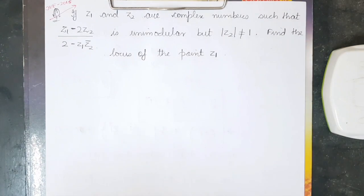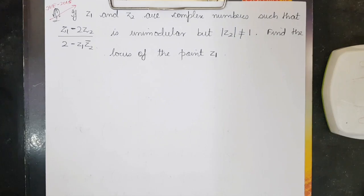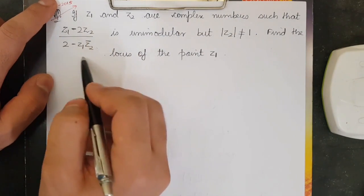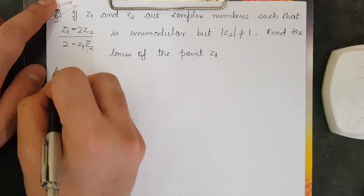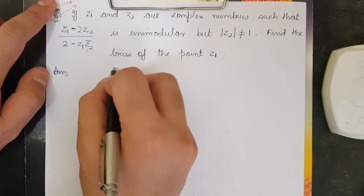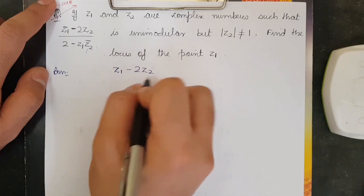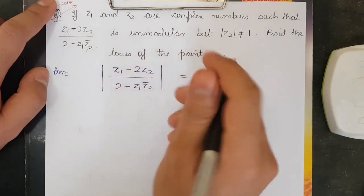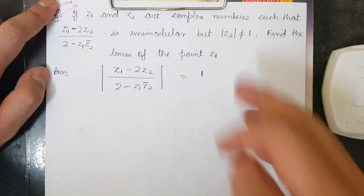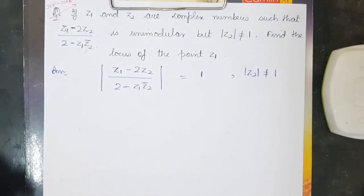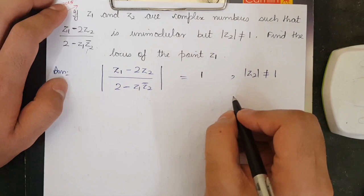Now let me do some questions. This example is taken from JEE 2015. We are given that z₁ and z₂ are complex numbers such that |(z₁ − 2z₂) / (2 − z₁·z̄₂)| = 1 (unimodular) but |z₂| ≠ 1. We need to find the locus of the point z₁.